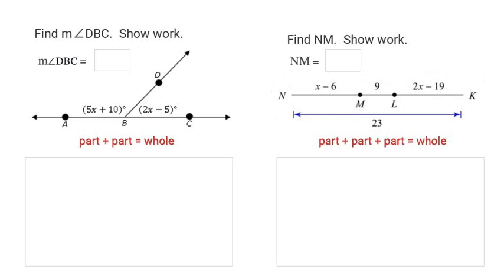add them together to set it equal to the whole. Remembering that for a straight angle, it measures 180 degrees. So we're going to add the two expressions for the angles, and set it equal to 180. Now your job is to solve that equation for x. But then realize it's asking you for the measure of angle DBC, so make sure you substitute x into the correct expression.